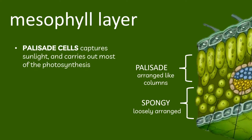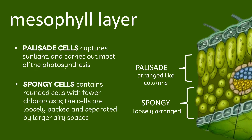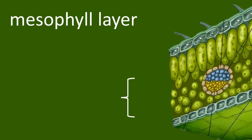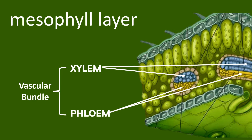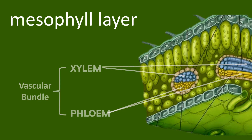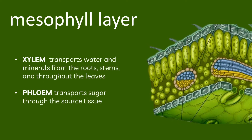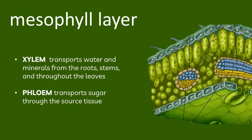The upper layer, which captures sunlight and carries out most of the photosynthesis, is the palisade mesophyll. The second layer is the spongy mesophyll, which contains rounded cells with fewer chloroplasts. The cells are loosely packed and separated by largely airy spaces. The veins of the leaf are made from vascular tissue, containing the xylem and phloem. The xylem transports water and minerals from the roots and stems throughout the leaves, while the phloem transports sugar to the source tissue.